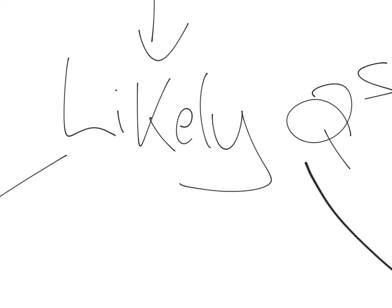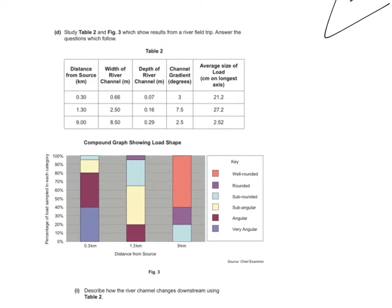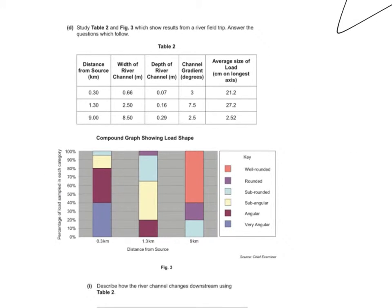As is common with all these videos now, we'll look at some of the likely questions. These are two example questions regularly come up. First of all, you can see here that we've got study table two and figure three. This is table two. This is figure three. And it relates to the characteristics of a river.